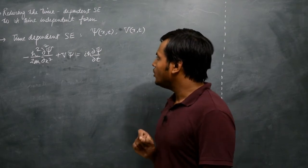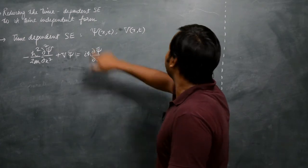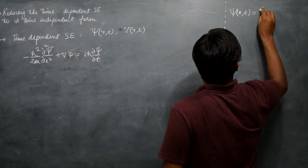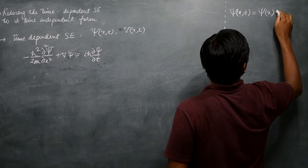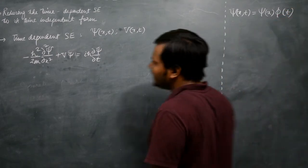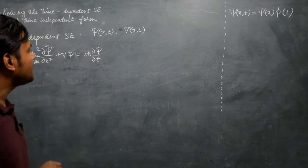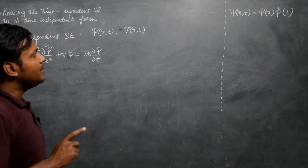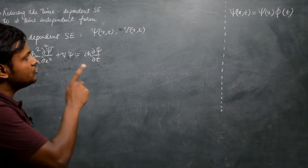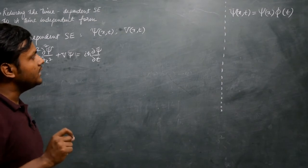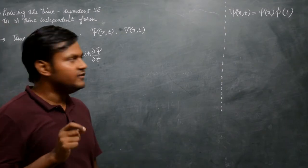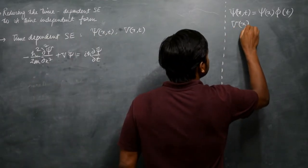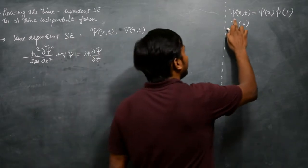I can reduce this partial differential equation into an ordinary differential equation if certain conditions are met. If this particular wave function, which is a function of both x and t, can be written as a product of two separate functions — one a function of space and the other a function of time — then I can reduce this expression to an ordinary differential equation. This condition holds whenever the particle is experiencing a potential field that is independent of time, i.e., the potential depends only on x.